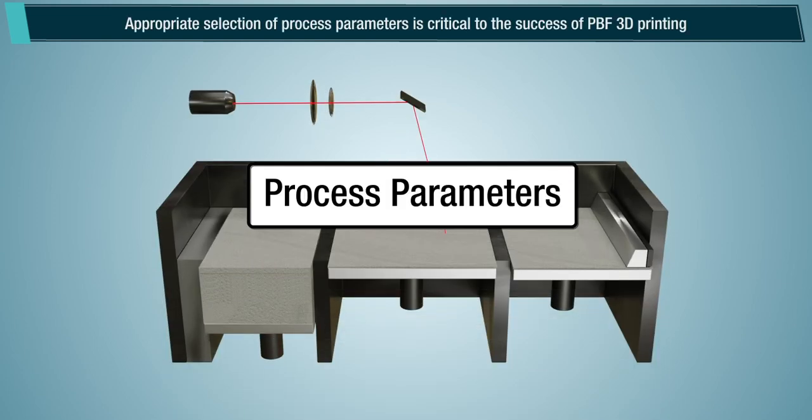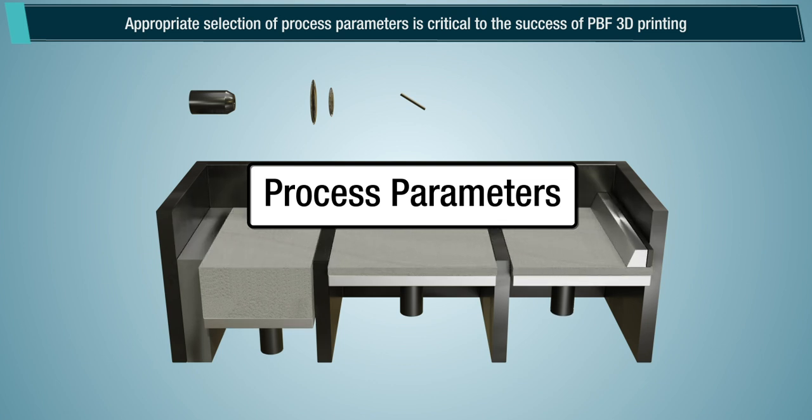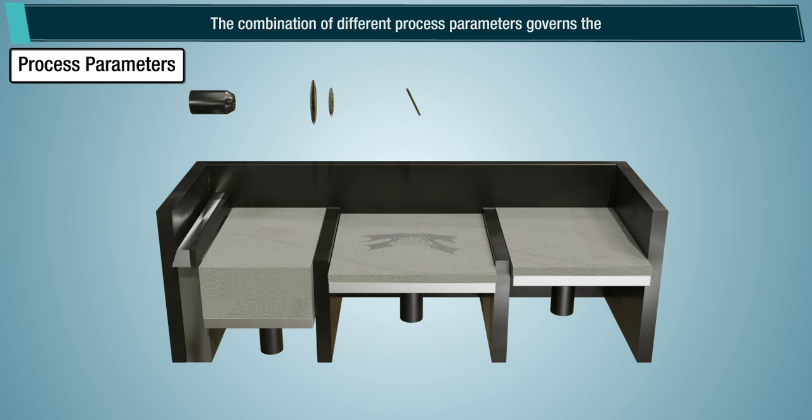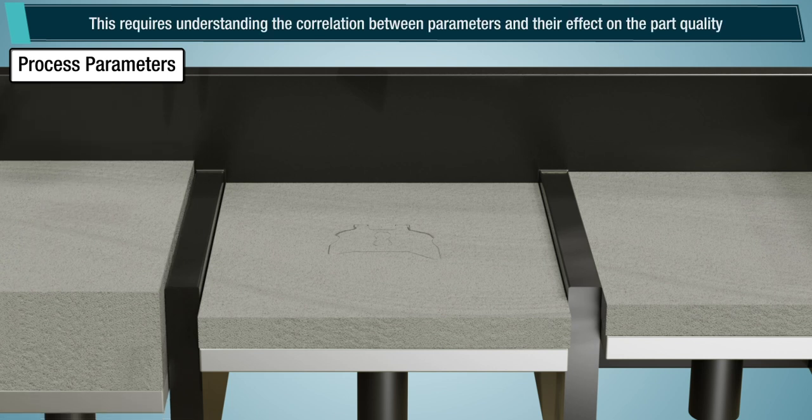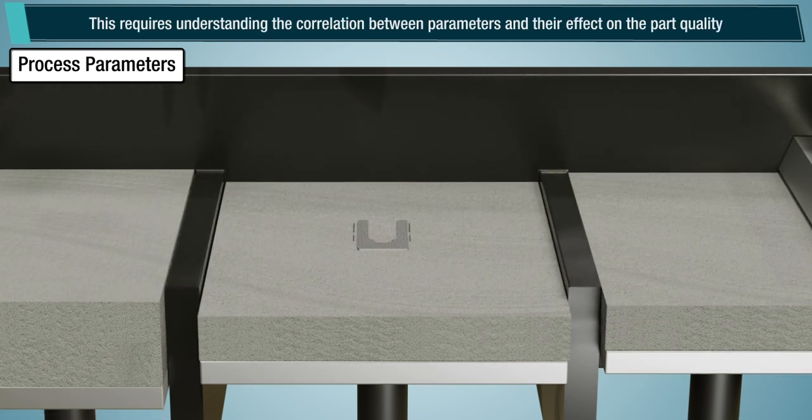Appropriate selection of process parameters is critical to the success of powder bed fusion 3D printing. The combination of different process parameters governs the dynamics of powder melting and solidification to form the part. This requires understanding the correlation between parameters and their effect on the part quality.